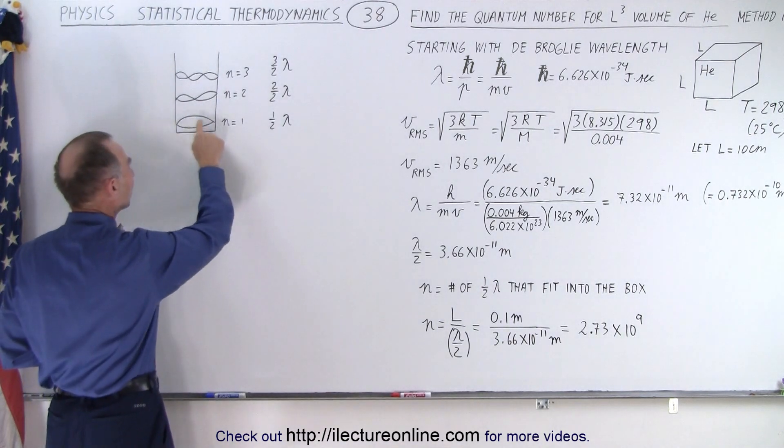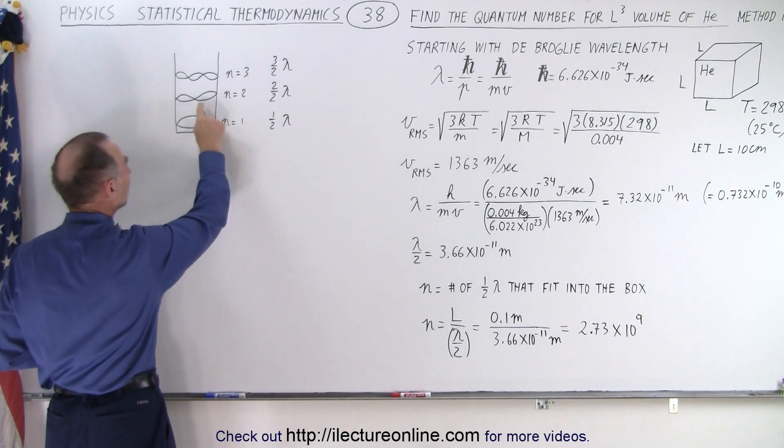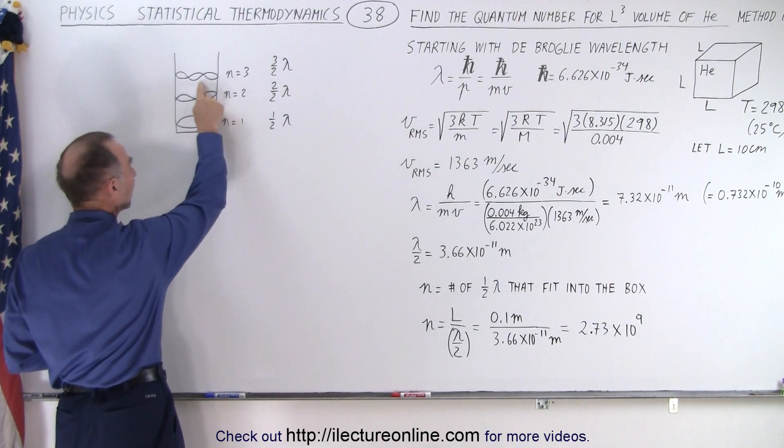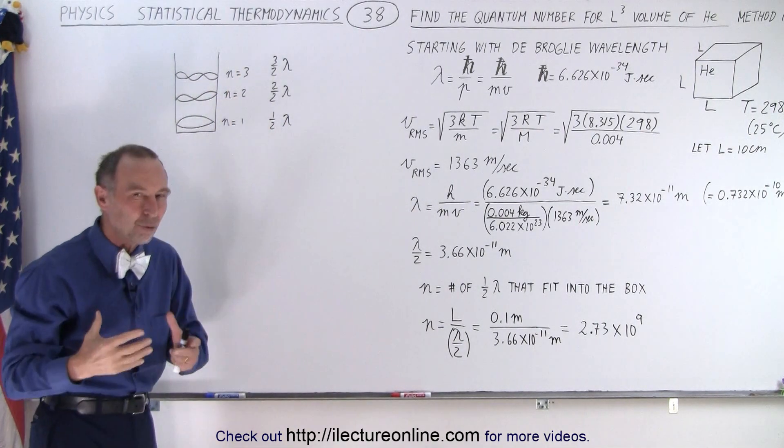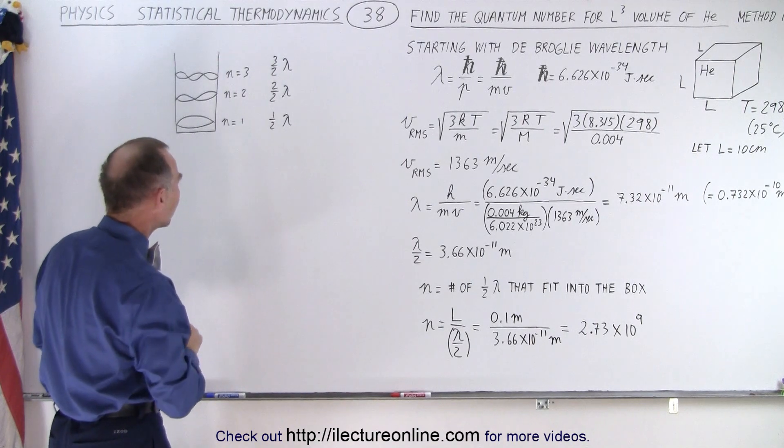So in this case we have a half a wavelength, that's quantum number equal to one. Here we have a full wavelength, quantum number two, one and a half wavelengths, quantum number three, so it's essentially the number of half wavelengths from one side of the well to the other side.